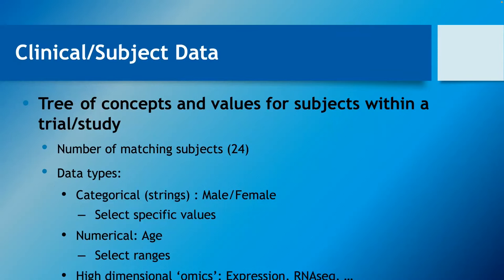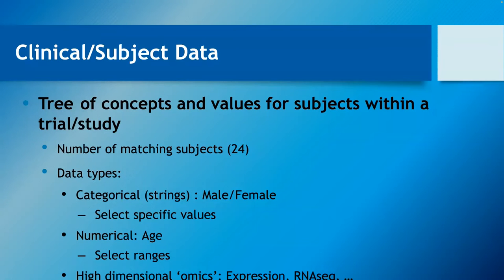You can run a query against the subjects within a trial or study — it tells you the number of matching subjects. You can look at categorical data types like male/female for sex or gender, numerical values like age, and then go to the high-dimensional data. You can run heat maps looking at all the gene expression data matching your subset of interest, or select an individual gene and look at subjects with expression of that gene within a particular range, which becomes part of your query.